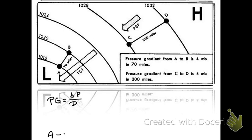The first thing we're going to do is calculate the pressure gradient at line A to B. You see that in the lower left side of your screen, near the L, near the low. We do that calculation by taking the difference in pressure, 4 millibars, and we divide it by 70, which is the distance. We come out with a pressure gradient of 0.057.